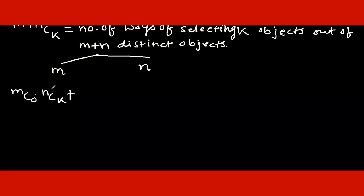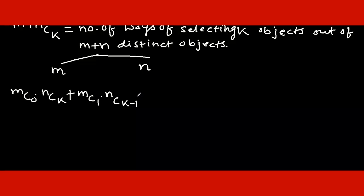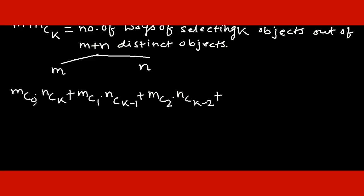Alternatively, from the first group we can select one object and from the second group select k-1 objects, giving a total of 1 plus k-1, which is k objects. Further, we can select two objects from the first group and k-2 from the second group. In each stage, we are selecting a total of k objects: 1 plus k-1 is k, and 2 plus k-2 is k.